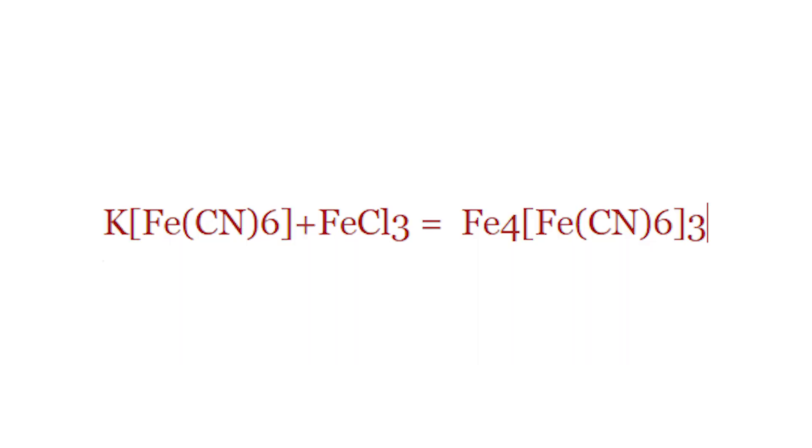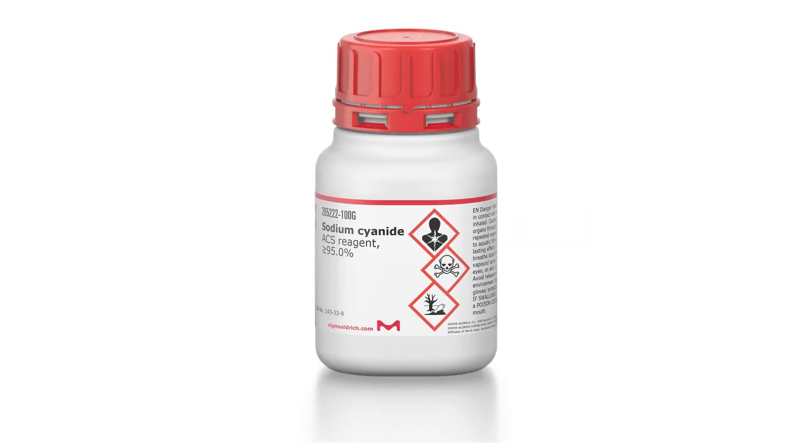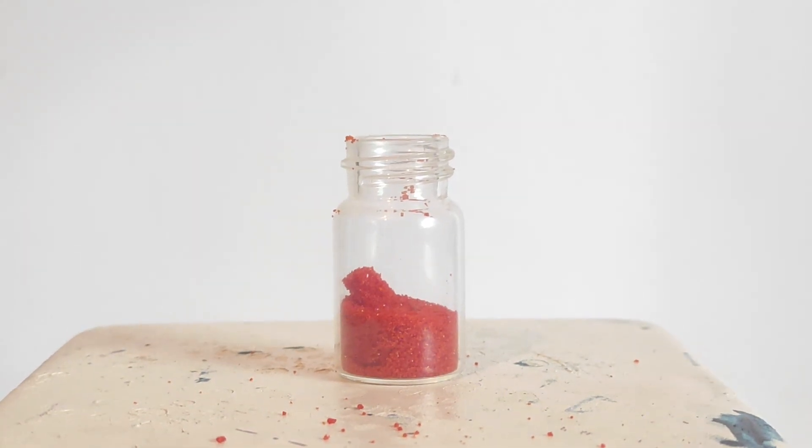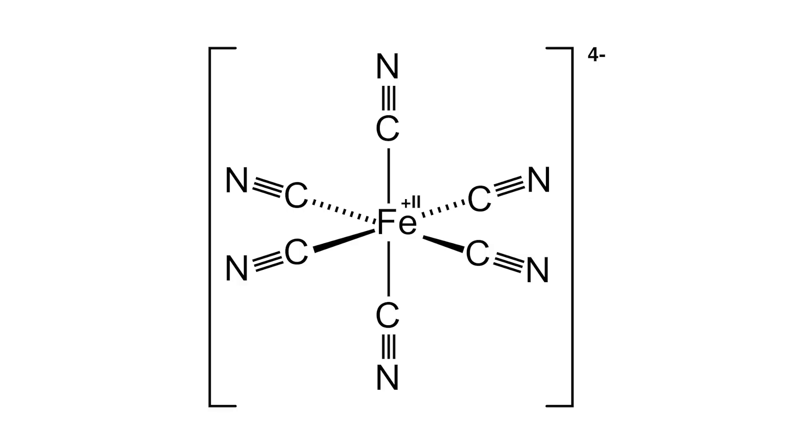Prussian blue is most commonly made from oxidizing ferrocyanide ions with iron-3 ions. Sodium cyanide can also be used in the reaction, but cyanide is, well, cyanide. The ferrocyanide may sound toxic, but trust me, it's not. Since the iron binds the cyanide groups very tightly, making them harmless.